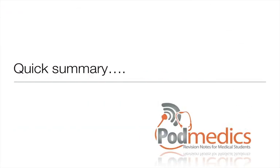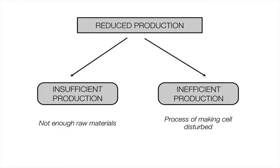In summary, anemia due to reduced production can be subclassified into insufficient production — lack of raw materials (iron, vitamin B12, folate) — or inefficient production, where the process of making cells is disturbed, usually because of a cellular or hypocellular bone marrow problem.